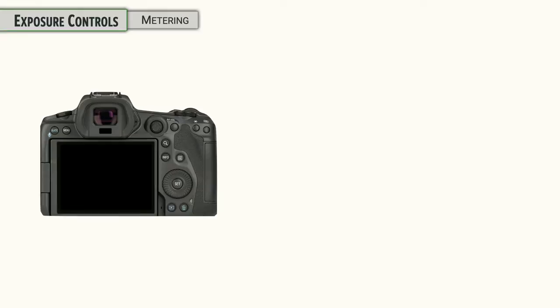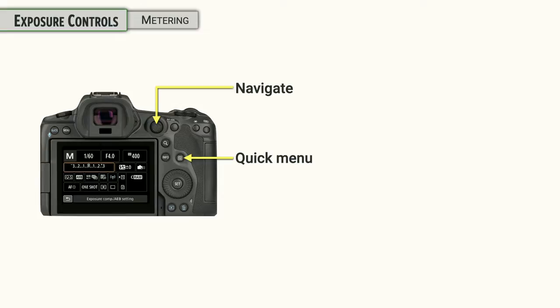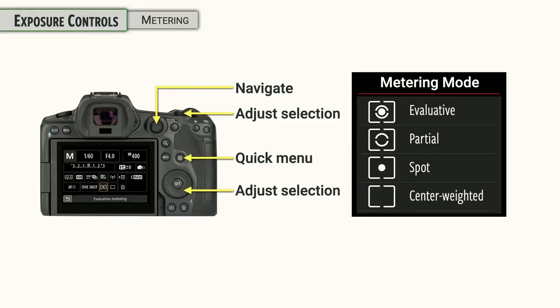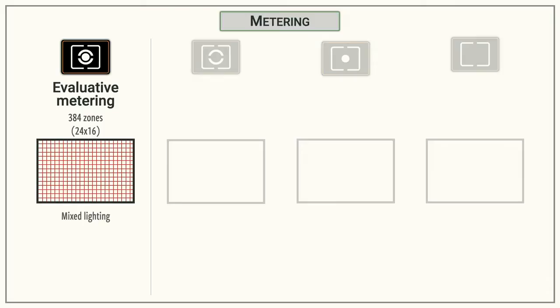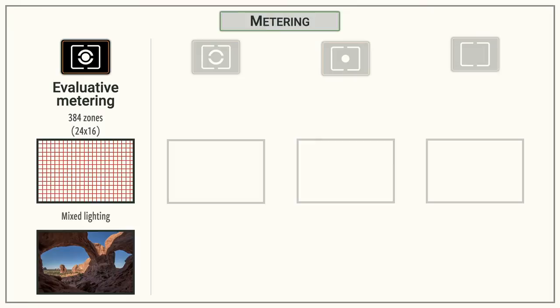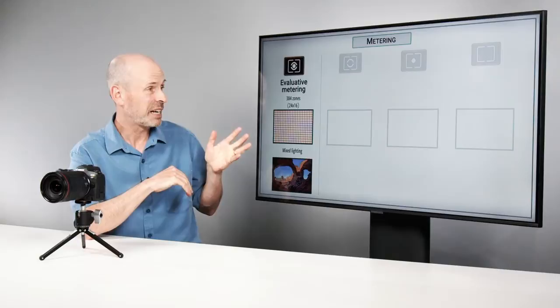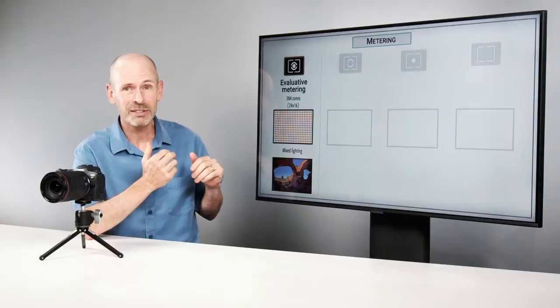Next, let's talk about metering — how the camera reads incoming light. To access it, hit the Q menu and navigate to the metering option. There are four different modes. First is Evaluative Metering, where the camera breaks the scene into 384 zones, comparing lights and darks in different parts of the scene to determine where the correct exposure should be. Evaluative metering generally does a really good job — this is where most photographers, including myself, leave their cameras most of the time.